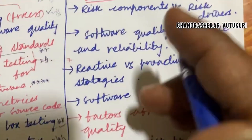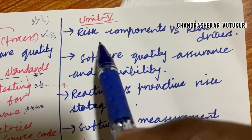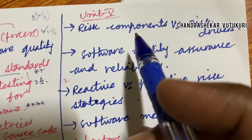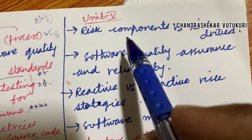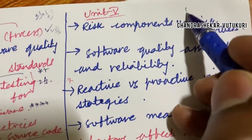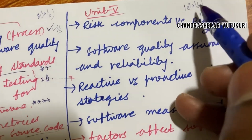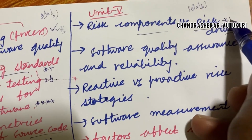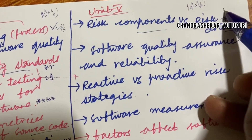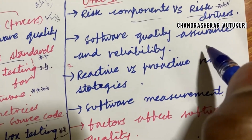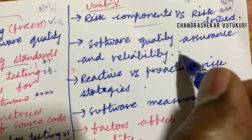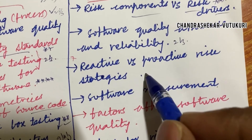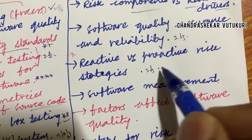You are supposed to work out each and every parameter I highlight — all taken from previous question papers as well as the syllabus of Software Engineering. For 10A and 10B: risk components versus risk drivers — differences — is a top most question. Software quality assurance and reliability may be a two or three mark question. Reactive versus proactive risk strategies may also be a two or three mark question.